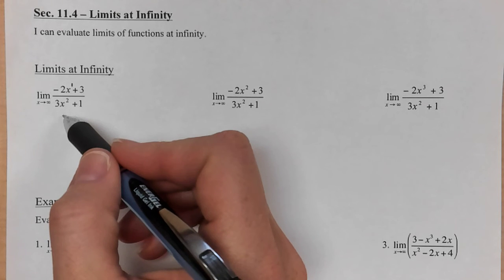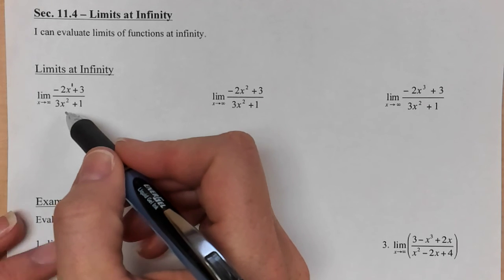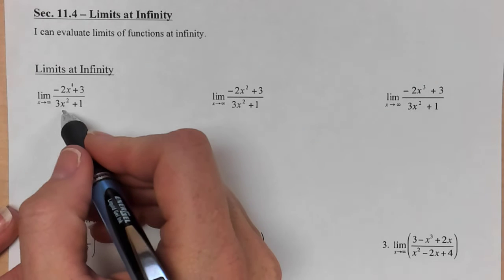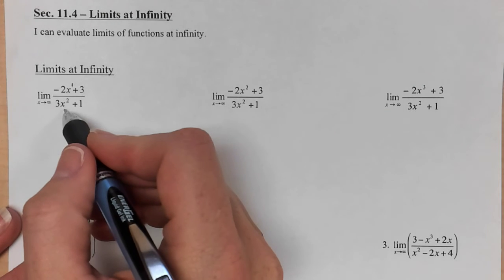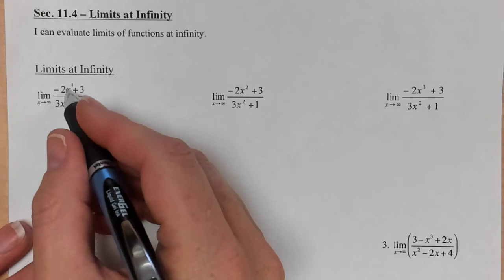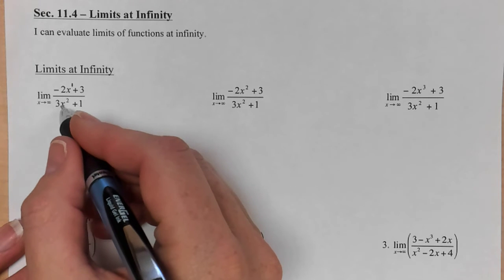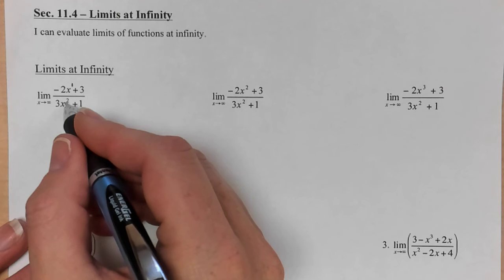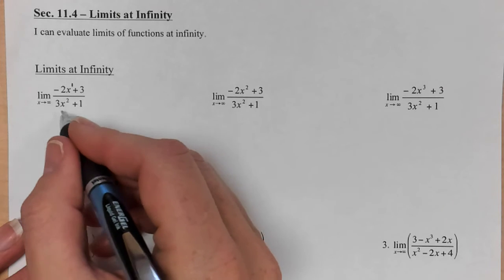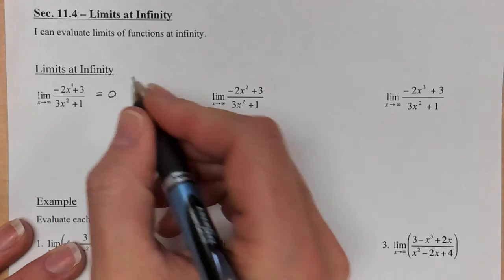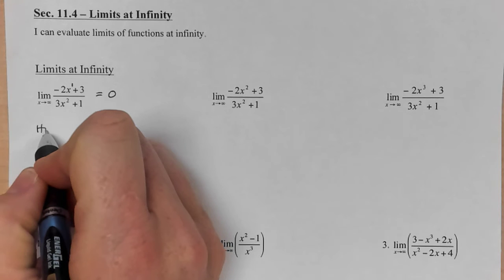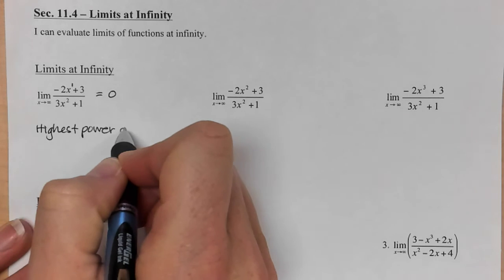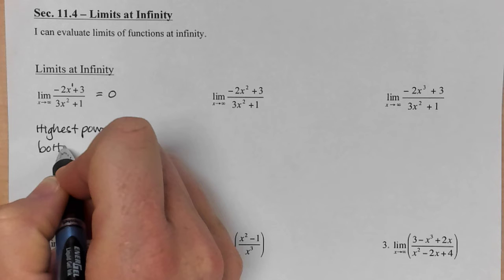So no matter what number I put in, I'm going to end up squaring it, making it very, very large, which overall makes a fraction very, very small. So the bigger the denominator gets, the smaller your fraction actually is. And so the larger numbers we keep plugging in, trying to get out to infinity, pretty soon we plug in a million, and we're squaring it. And so it's getting so large on the bottom that it actually comes out to be 0. So when the highest power is on the bottom, your limit is 0.